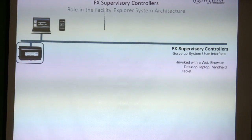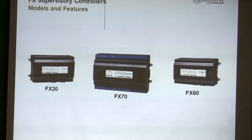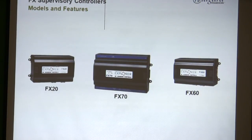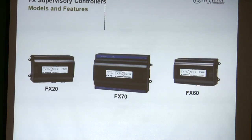Johnson Controls represents the three Jace sizes as FX-20, FX-60, and FX-70. Every Tridium Jace comes in three sizes. Tridium's own line calls them Jace-2, Jace-6, and Jace-7. Honeywell calls them Web 201, Web 600, and Web 700 — they're all essentially the same thing in different sizes.